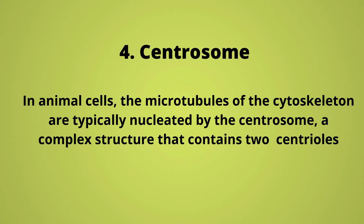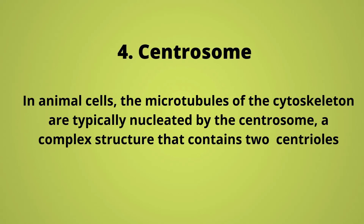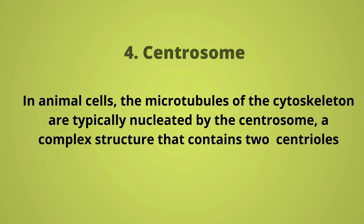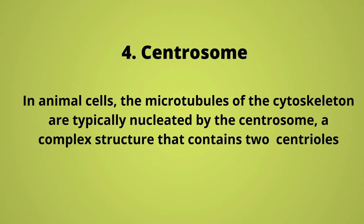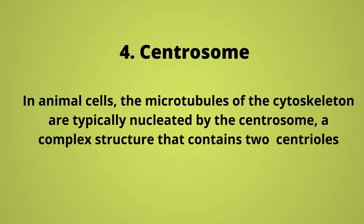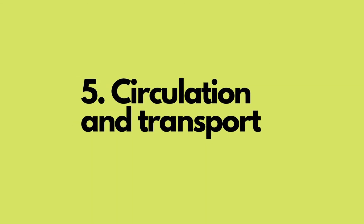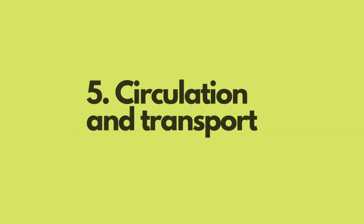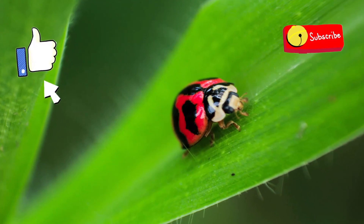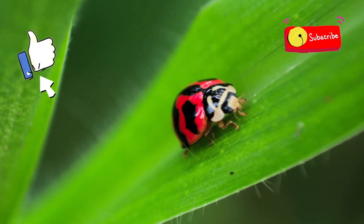In animal cells, microtubules are typically nucleated by the centrosome, a complex structure containing two centrioles. Each centriole is made up of nine units of microtubule triplets. Centrioles are also involved in the formation of the axoneme and the axial filament in the tail of the spermatozoa. Microtubules are also involved in the transportation of macromolecules, granules, and vesicles within the cell.